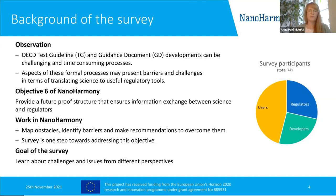In Nanoharmony, Objective 6 is directing into this topic because it aims for a future-proof structure that ensures information exchange between science and regulators is working well and in a timely manner. So what we do in Nanoharmony is basically mapping those obstacles and identifying the barriers, and we'd also like to provide recommendations on how to overcome them. The goal was to learn about challenges and issues along the OECD test guideline development process from different perspectives — regulators, developers, and users — asking them how they see the process, where they see challenges, and what they suggest to overcome them. We really appreciated that 74 people joined the survey and answered our questions, even though the questionnaires could take up to 20 minutes.